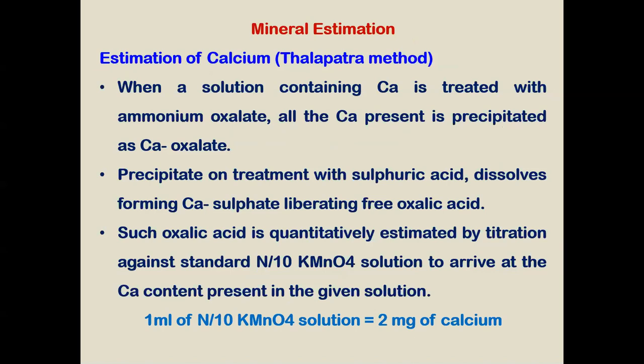For mineral analysis, one of the major minerals is calcium. In the Talpatra method for estimation of calcium, a solution containing calcium is treated with ammonium oxalate, and all the calcium is precipitated as calcium oxalate. The precipitate is treated with sulfuric acid, dissolving it to form calcium sulfate and releasing free oxalic acid. This oxalic acid is quantitatively estimated by titration against a standard N/10 KMnO₄ solution to arrive at the calcium content.